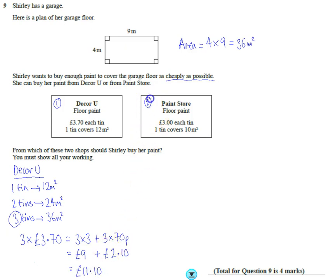Let's do the same thing, but let's look at the Paint Store now. So I'm just going to make a note of what I'm doing. I'm showing my working, show all your working. So let's do the same thing. But this time, one tin doesn't cover 12, it only covers 10 meters squared. So one tin is going to cover 10 meters squared.